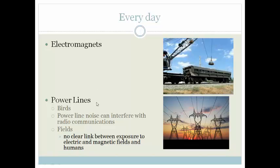Then we have power lines. Power lines are a problem for lots of things, but they are also very good for us because they provide us with electricity. These power lines are carrying huge amounts of current compared to everyday life, and because they are carrying this current they have magnetic fields around them.